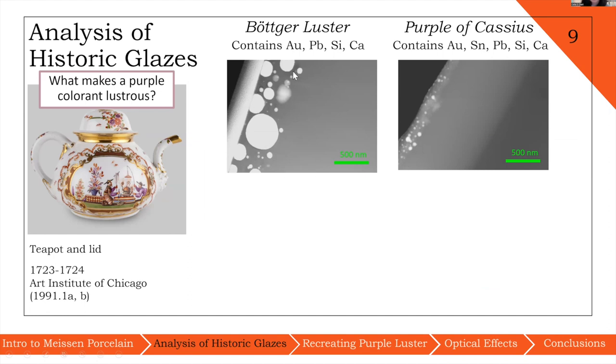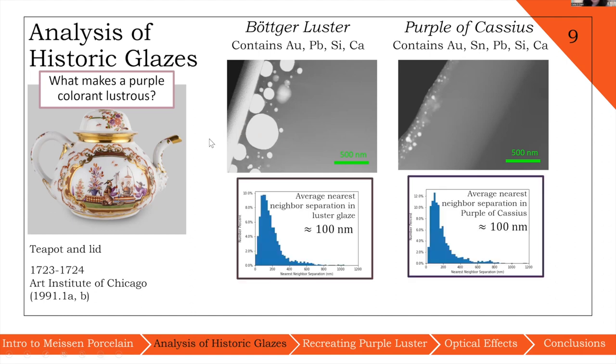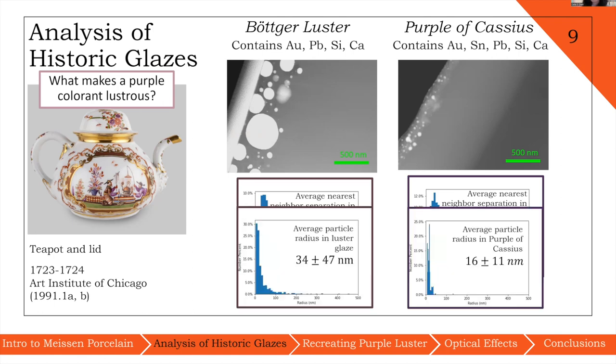The nanoparticle sizes are different, but also chemically speaking, we see a really high concentration of tin directly surrounding the gold nanoparticles within purple of Cassius. We do not see any tin present in Böttger luster at all. Drawing attention to the particle sizes, here I have two micrographs showing the same scale bar.